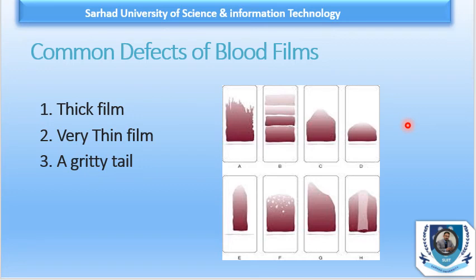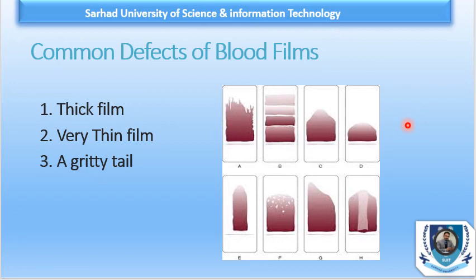Common defects and their causes: a thick film results if the blood drop is too large, spreading is done too quickly, or the angle of the spreader is too high. A very thin film results if the blood drop is too small, spreading has been too slow, or the angle of the spreader was too low. A gritty tail results if spreading was too slow, there was a delay in spreading, only part of the blood drop was utilized, or the spreader was not appropriate. In addition, some anticoagulants other than EDTA and high TLC also give rise to a gritty tail.